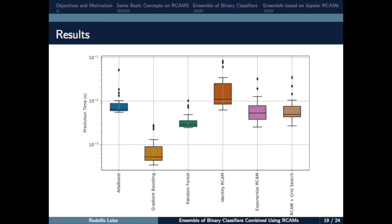Finally, we present the computational effort for every model using this boxplot. Note that the most expensive method is identity RCAM base-ensemble classifier, while the Gradient Boosting is the cheapest. The exponential RCAM base-ensemble is less expensive than the AdaBoost and quite comparable to the Random Forest classifier.